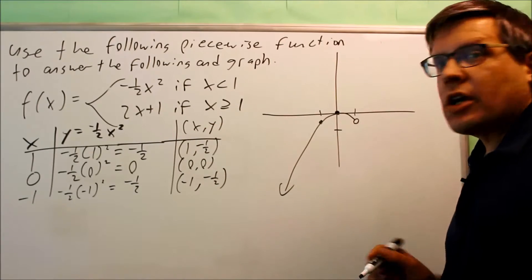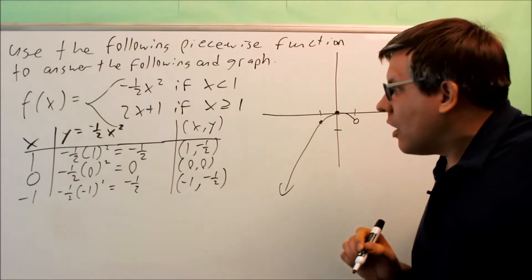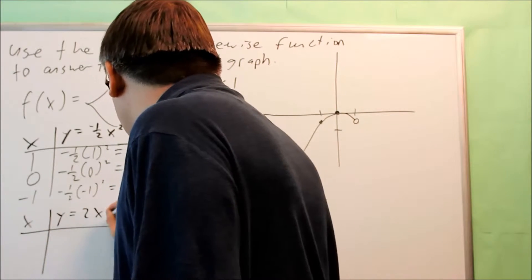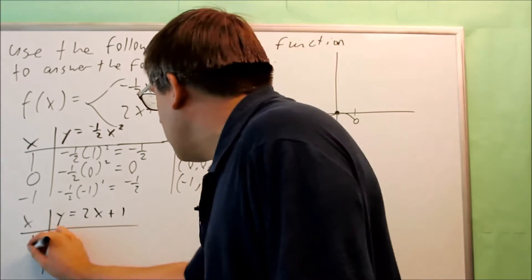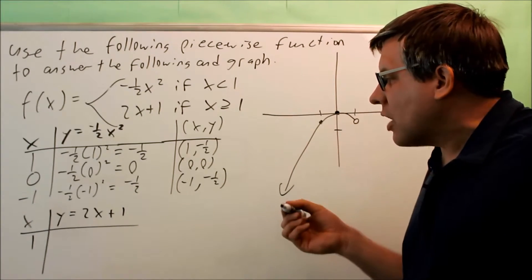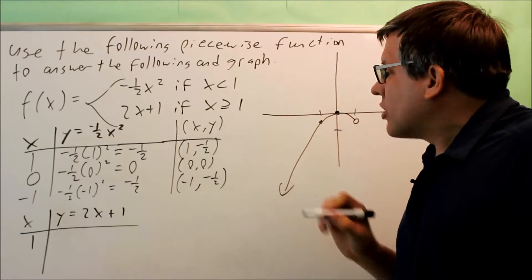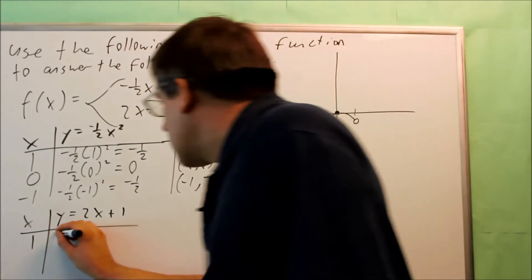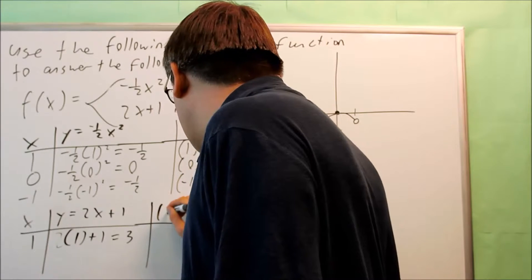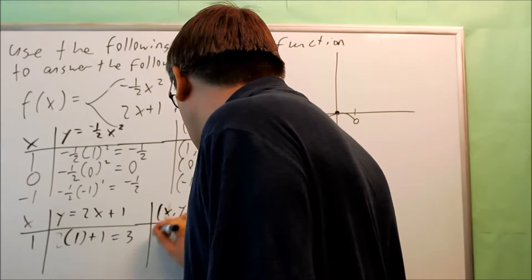The next one, the 2x plus 1, we're going to make a table for that one as well. Because this is a line, we only need two points. I always want to use whatever number is here in the condition. In this case, when I plot it, it's going to be a closed circle because we have the equal sign underneath, which means we are including 1. 2 times 1 plus 1 gives us 3, so we have 1, 3 as the first point.